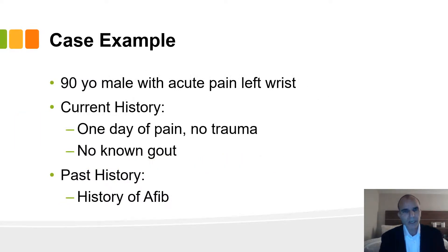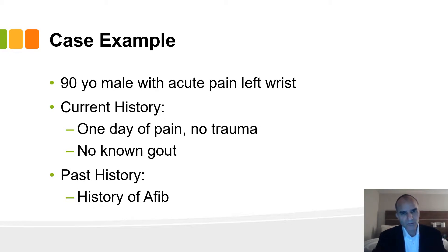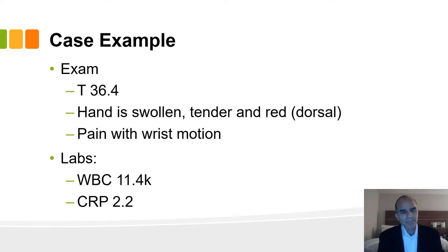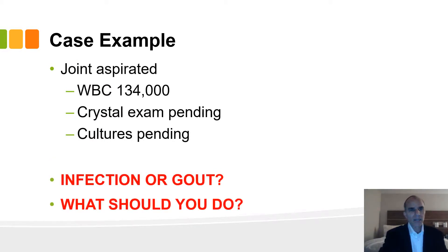Here's a case example — a real case. A 90-year-old male came in with acute left wrist pain. There's not much in the history: no history of trauma, no history of gout, and it started just the day before. His past history is notable for atrial fibrillation. On exam he is afebrile; his hand is swollen, tender, and red, with pain with movement. His labs show an elevated white count and elevated CRP. So the question is, how do you approach this?